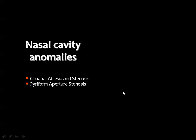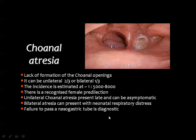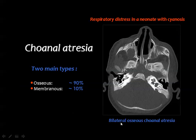The two main anomalies in the nasal cavity are choanal atresia or stenosis and the bony nasal aperture stenosis. Choanal atresia is one of the conditions we encounter frequently in clinical practice, especially for those working in children's hospitals. It was previously diagnosed by a very old technique known as the salpingopharyngogram, but nowadays CT is of great help to assess this anomaly.